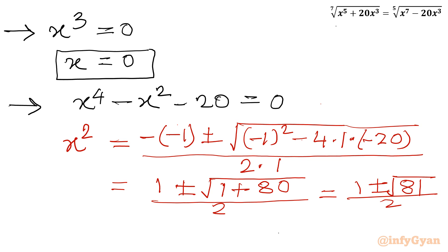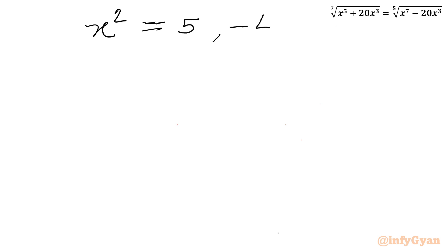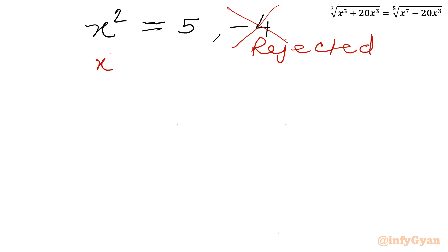This simplifies to: x² equal to 1 plus or minus the square root of 1 plus 80, all divided by 2. That is 1 plus or minus √81 divided by 2, and since √81 is 9, we get x² equal to (1 plus or minus 9) divided by 2. With the plus sign: 10 over 2 equals 5. With the minus sign: minus 8 over 2 equals negative 4. So x² equals 5 or x² equals negative 4.